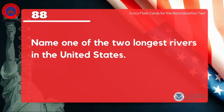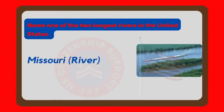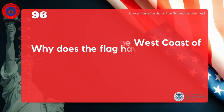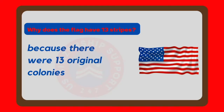Name one of the two longest rivers in the United States. Missouri River. Why does the flag have 13 stripes? Because there were 13 original colonies.